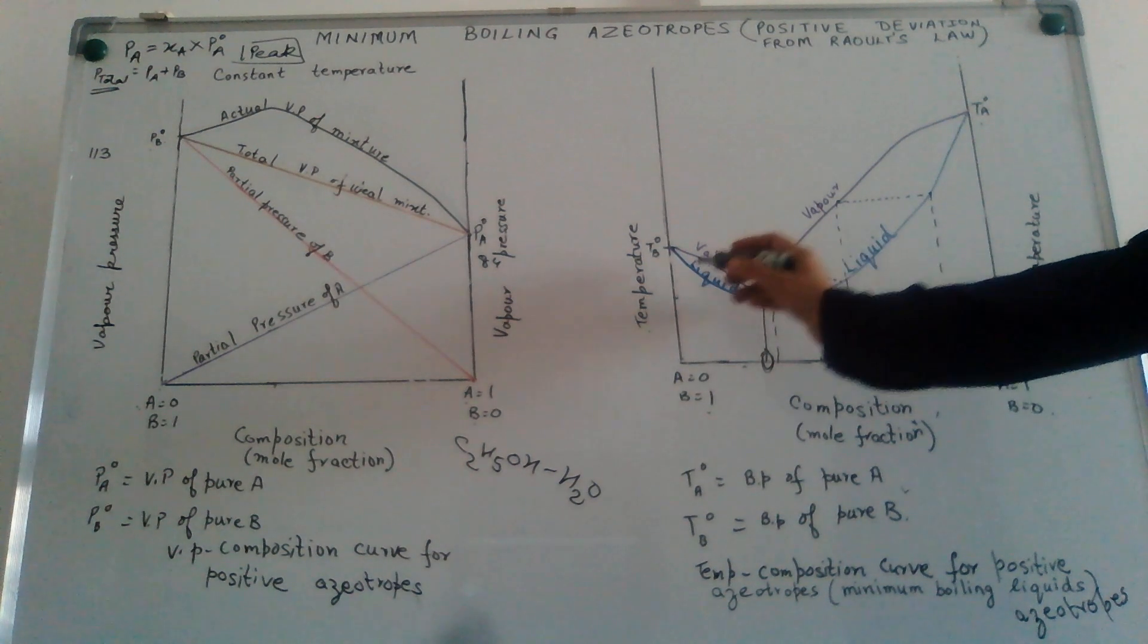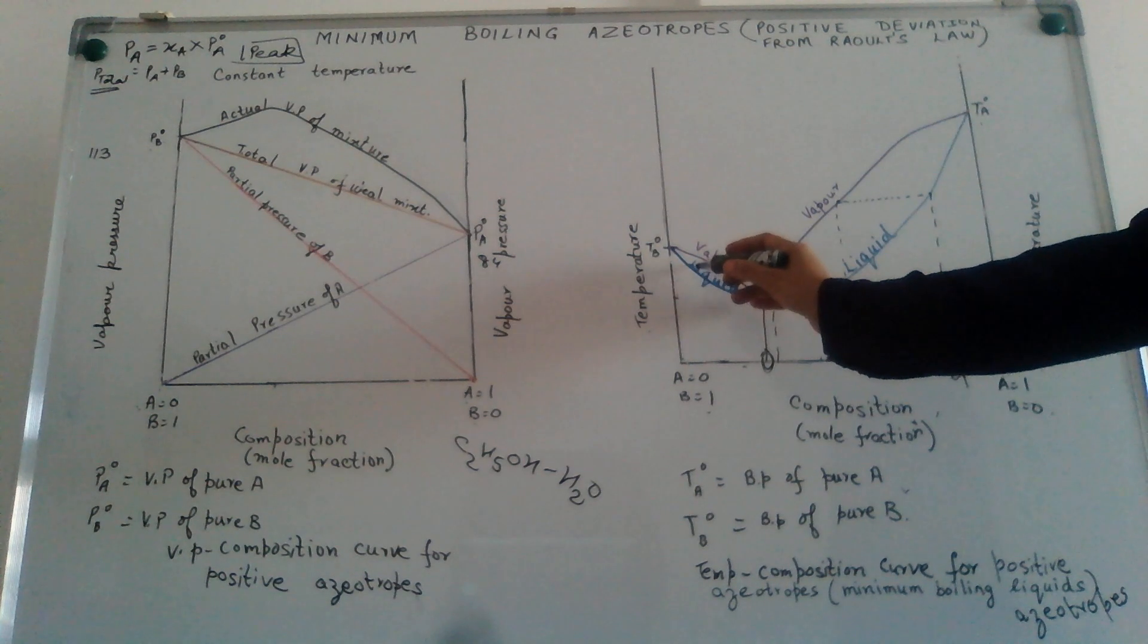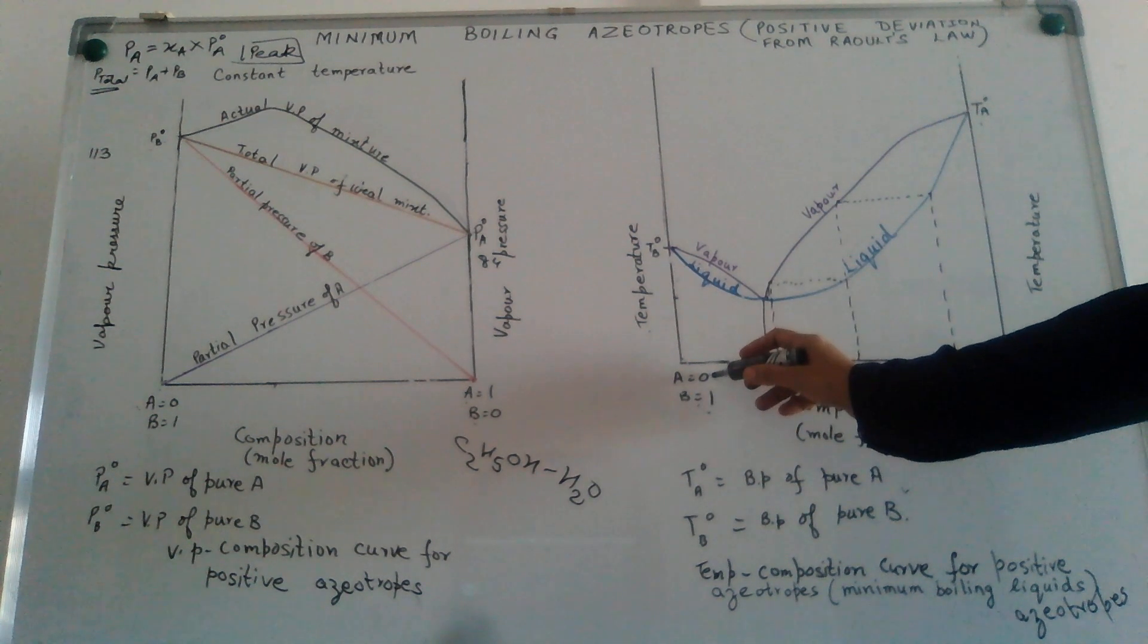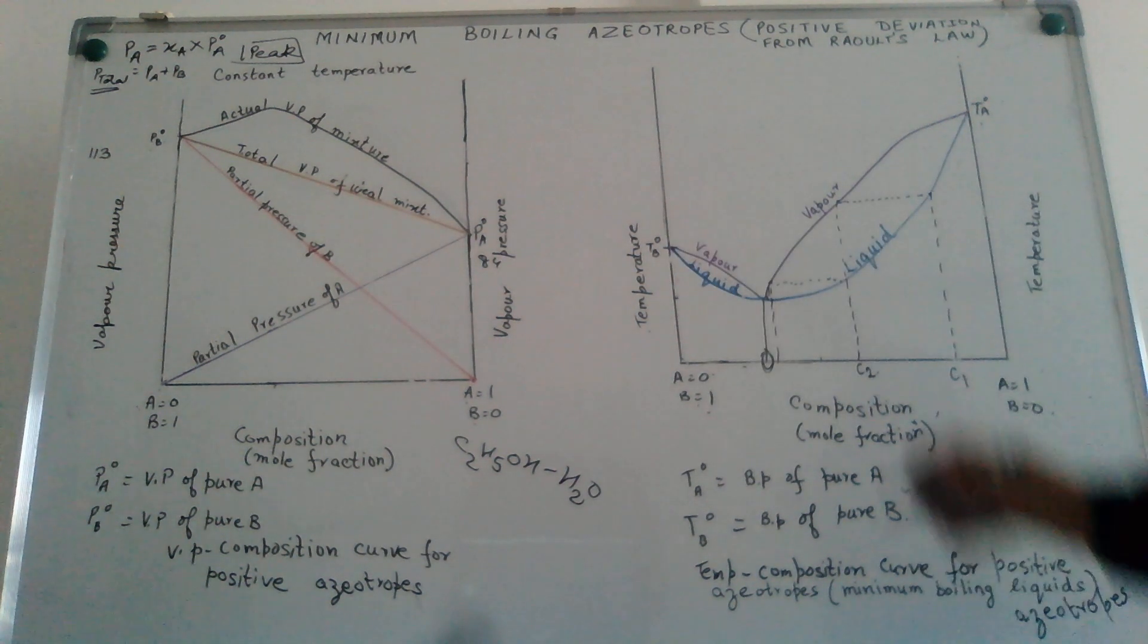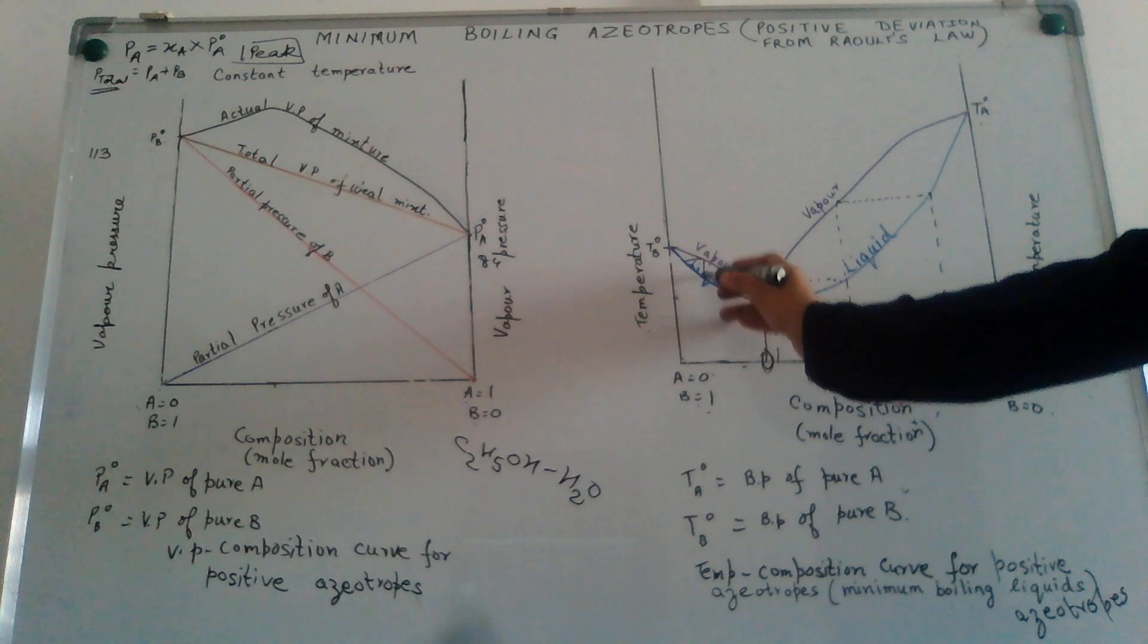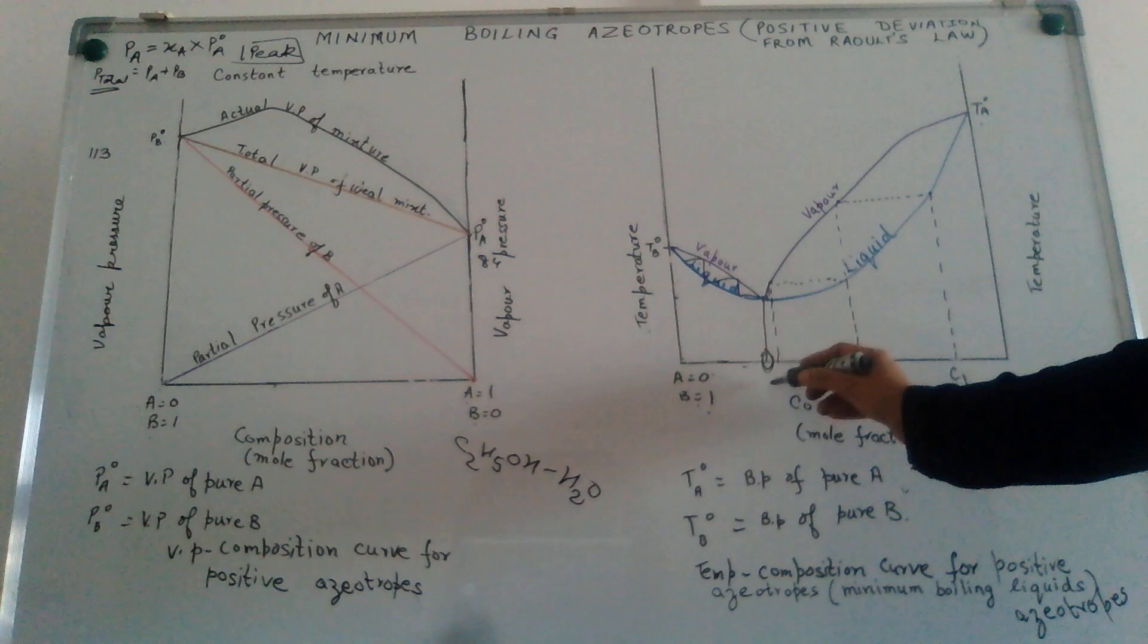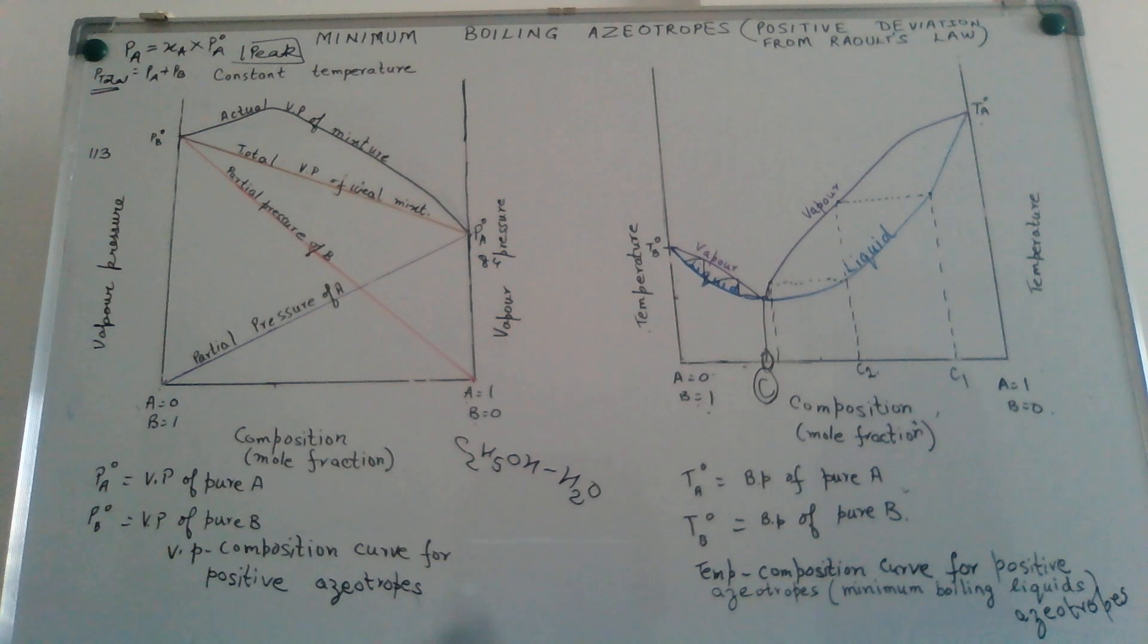Again, you can start from this end also. That means you can start with a liquid mixture where the composition of B is higher than that of A. In other words, your liquid mixture corresponds to this composition. We will notice here again, heat, cool, heat, cool, heat. Again, we come to this composition where this liquid mixture forms an azeotropic mixture.